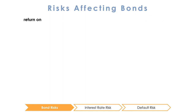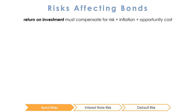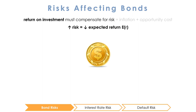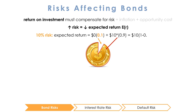In the next video we'll talk about another type of risk that affects our return known as default risk. Recall that investors require a return on their investments that covers their risk, inflation, and opportunity cost. Why do they require a return on risk? Because risk lowers the expected value of an investment. If an investment claims to offer a $10 return in today's dollars but there is a 10% chance that I will earn nothing, then my expected return is really only $9, or 10 times 1 minus 0.1.